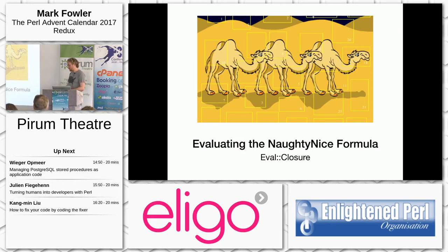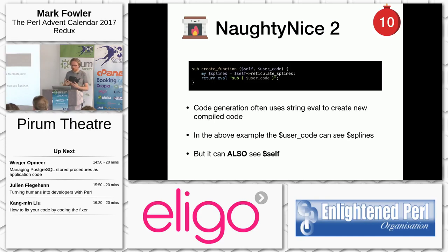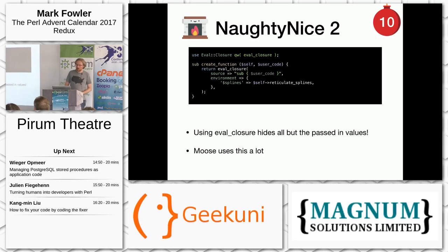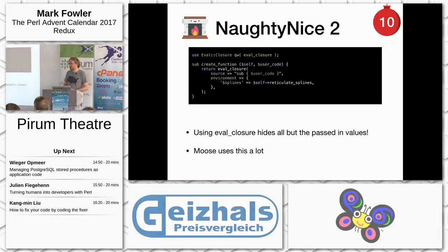Once you've got that grammar, the next day I wanted to turn it into Perl code, which is fairly straightforward — a little bit of substitution. Then you compile it by running it through a string eval. String eval is really powerful: it can turn strings into Perl code and also allows that Perl code to access variables in lexical scope. So the function returned has access to the reticulated spline variables. But the trouble is it also has access to anything else in lexical scope, meaning the Perl code has access to 'self' here, which can lead to weird and crazy bugs. There's a module to avoid that called Eval::Closure, which allows you to specify not only what the source is but the exact environment it's allowed to access. This is used in the guts of Moose.